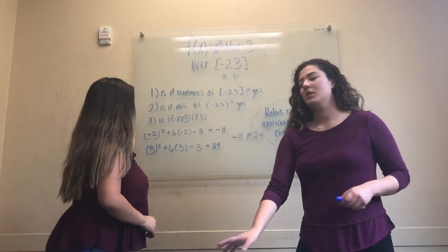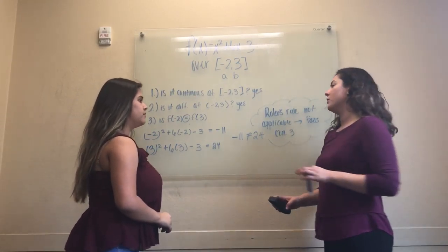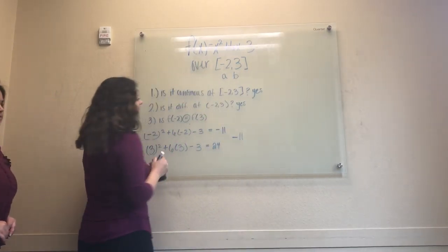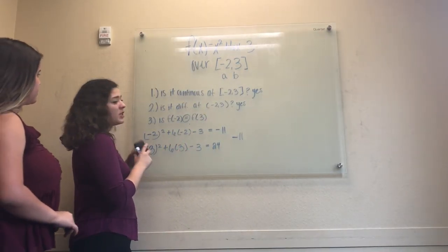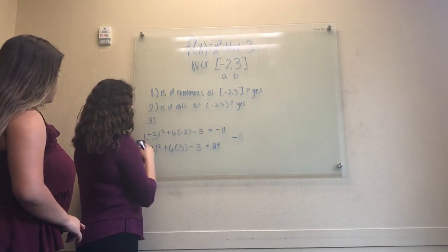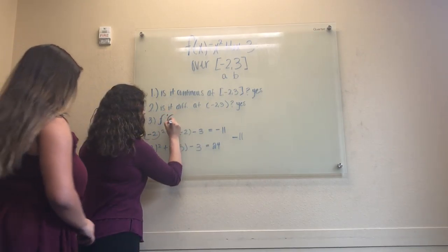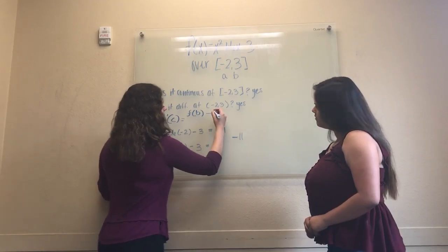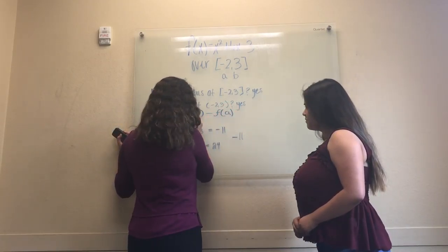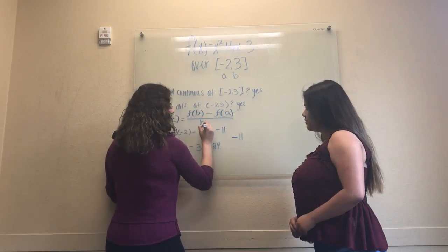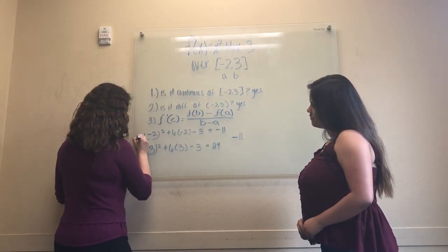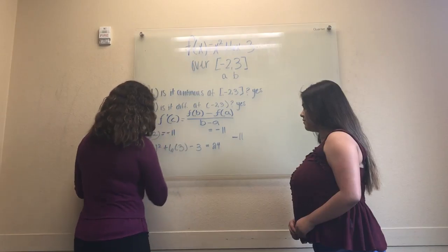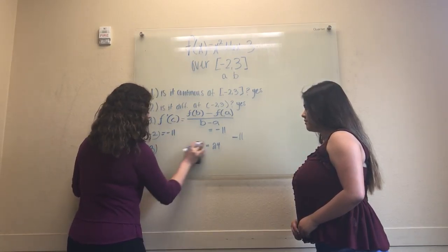For our second part of this same equation, we have to find c in order for the mean value theorem to be true. So I'm going to erase some part of it because I need space. And our conditions are practically the same, but it changes in number 3. For condition number 3, it has to be f prime of c equals f of b minus f of a divided by b minus a.